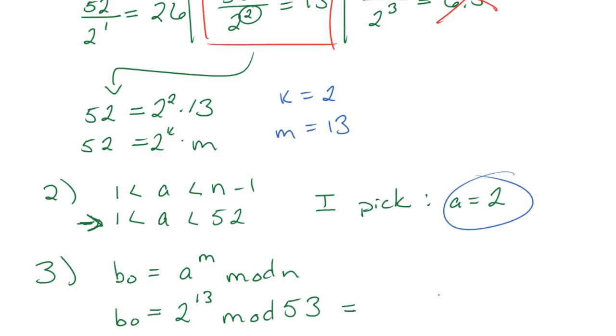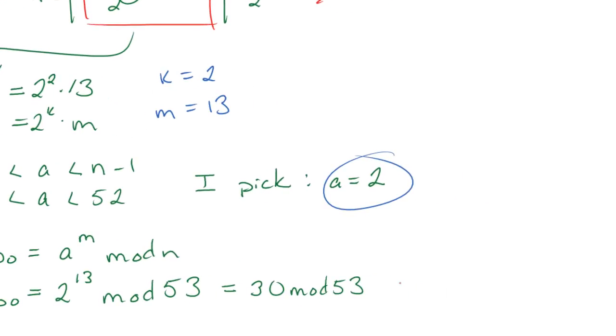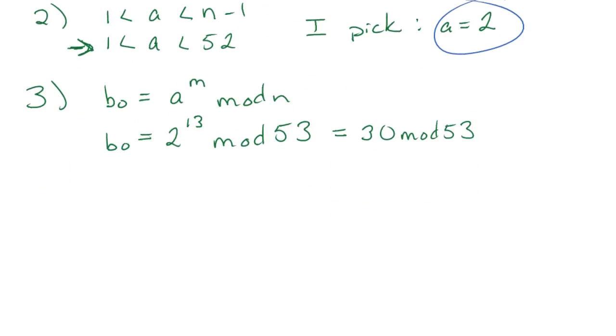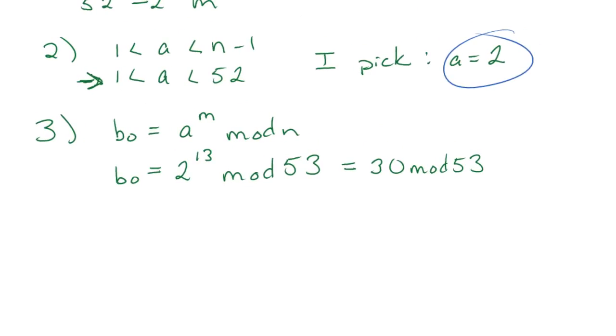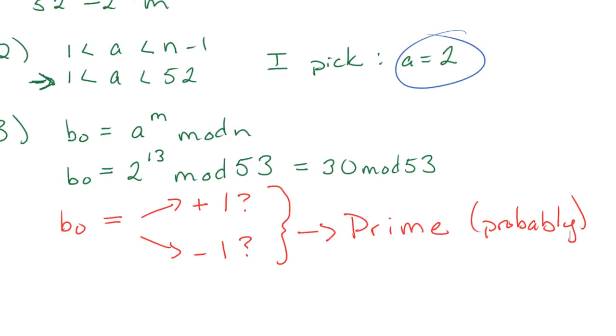Okay, so this equals 30, if you were to calculate that. So what I am asking when I compute b0 is the following. b0, we want to know if it equals either positive 1 or if it equals negative 1. If b0 equals either of these, it means that n is prime. I'll add probably, it's probably prime. I'm not totally sure, but the test says prime, yes.